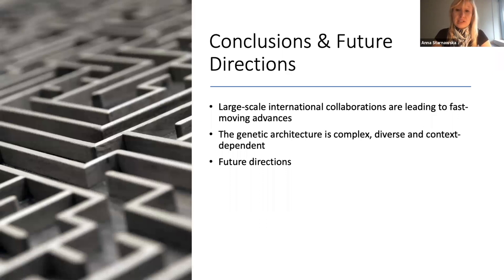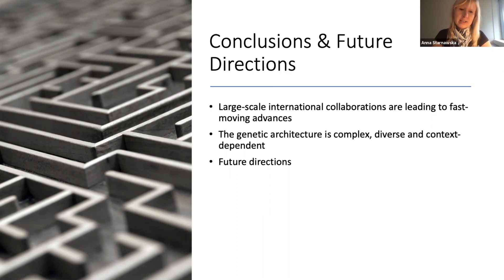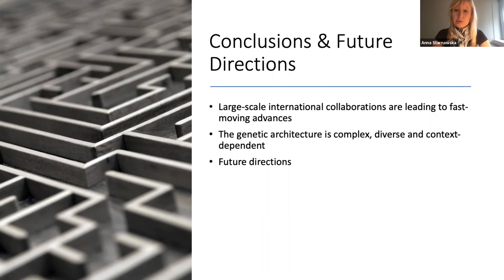Recent large-scale and internationally collaborative investigations have led to a better understanding of the genetic contributions to autism, and ongoing work is likely to lead to significant advances in the coming years. Findings show that the genetic architecture of autism is complex, diverse, and context-dependent, highlighting a need to study the interplay between different types of genetic variants, identify genetic and non-genetic factors influencing their penetrance, and better map the genetic variants to phenotypic heterogeneity within autism.